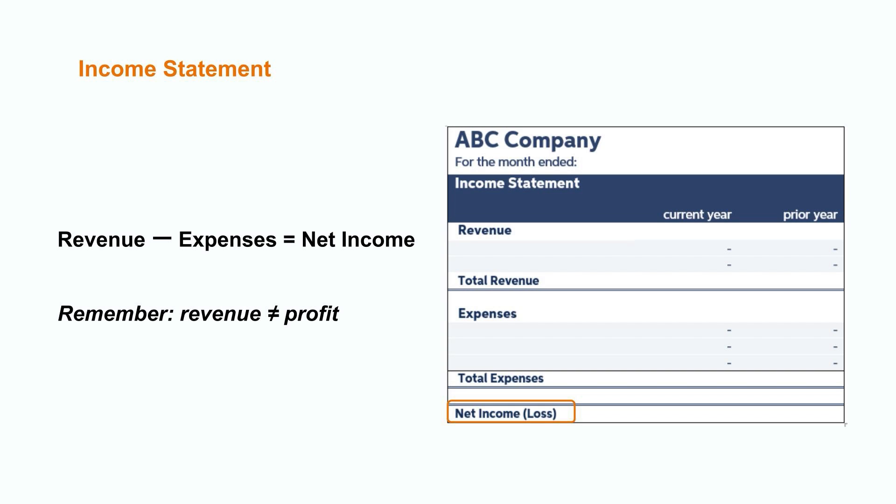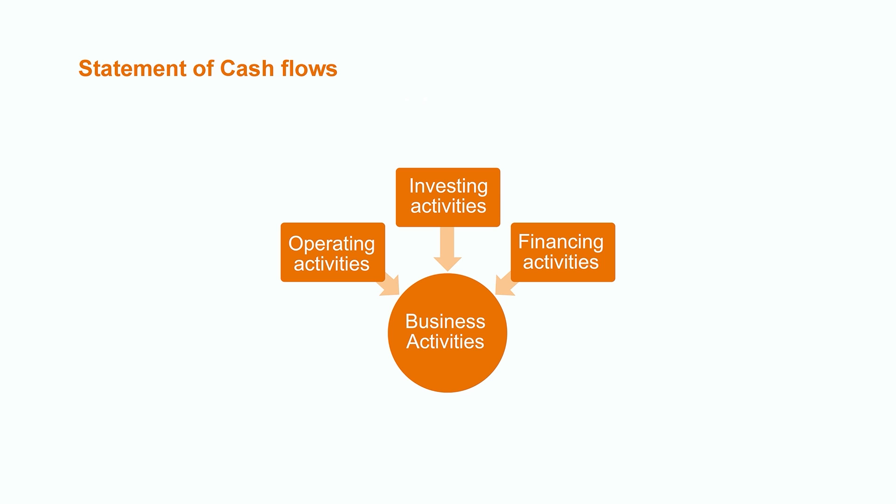This net income number feeds into the retained earnings calculation, which ultimately is reported on the balance sheet. More to come on the correlation between the financial statements shortly. While the balance sheet tells us the actual amount of cash sitting in the company, it doesn't tell us exactly where the money came from and where it's being spent. This is where the cash flow statement works its magic, by showing us the flow of every dollar, breaking it down into three sections: operating activities, investing activities, and financing activities.